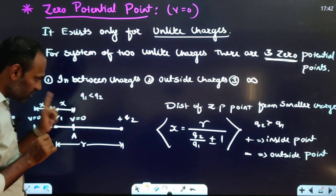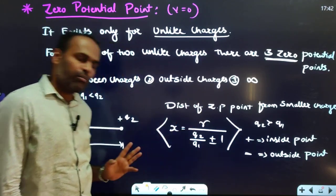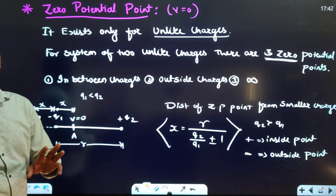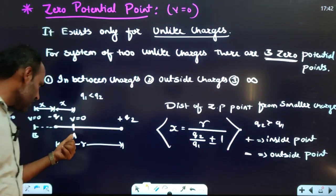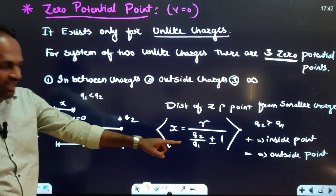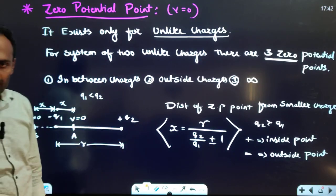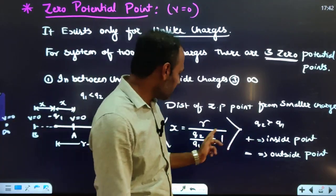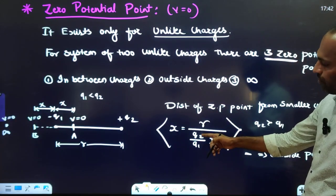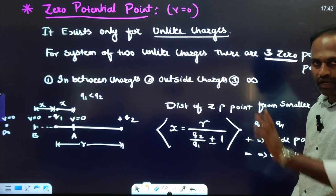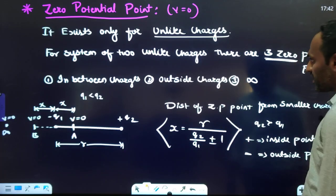To find the distance of the zero potential point, use the shortcut formula: x = R / (q₂/q₁ ± 1), where q₂ is greater and q₁ is smaller. Use plus (+) to find the internal zero potential point and minus (−) to find the external zero potential point distance. The greater charge goes in the numerator.